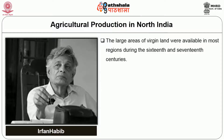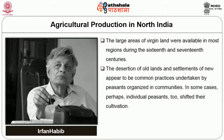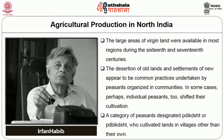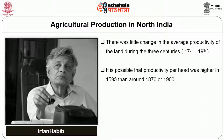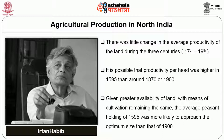Large areas of virgin land were available in most regions during the 16th and 17th centuries. The desertion of old lands and settlement of new ones appears to be a common practice undertaken by peasants organized in communities, and in some cases individual peasants too shifted cultivation. According to Habib, it is possible that productivity per head was higher in 1595 than around 1870 or 1900, given the greater availability of land with the means of cultivation remaining the same.